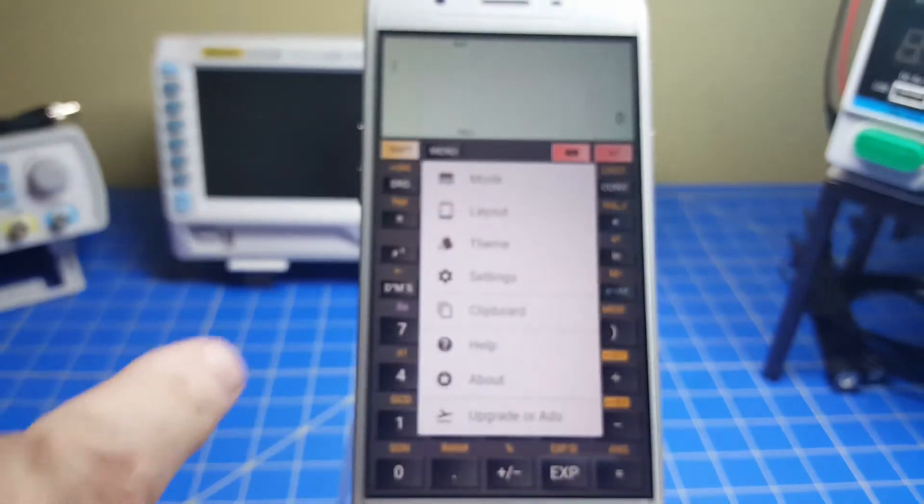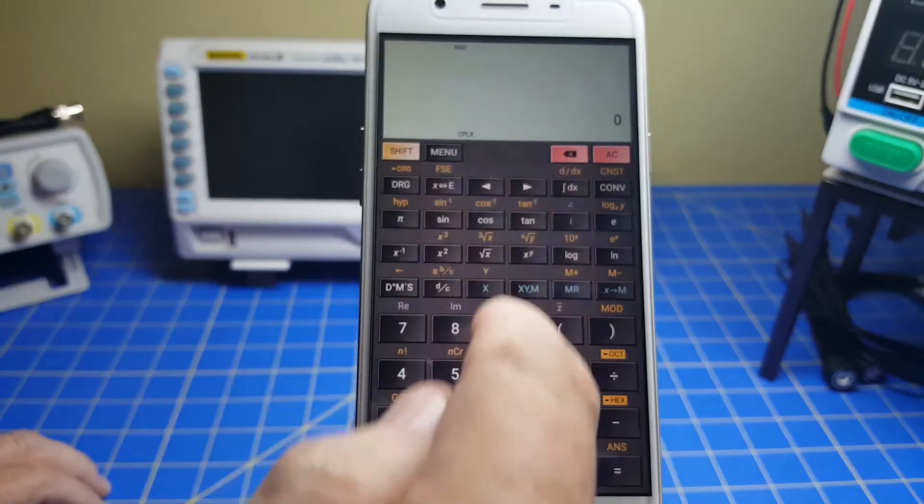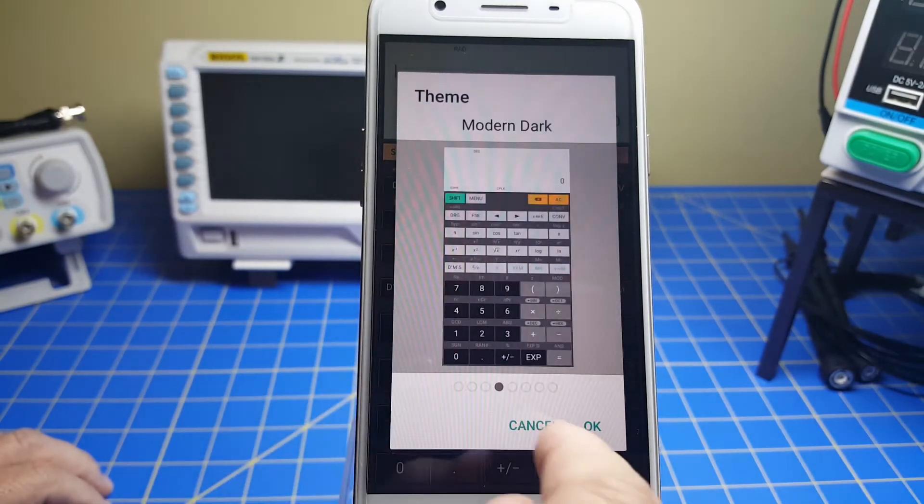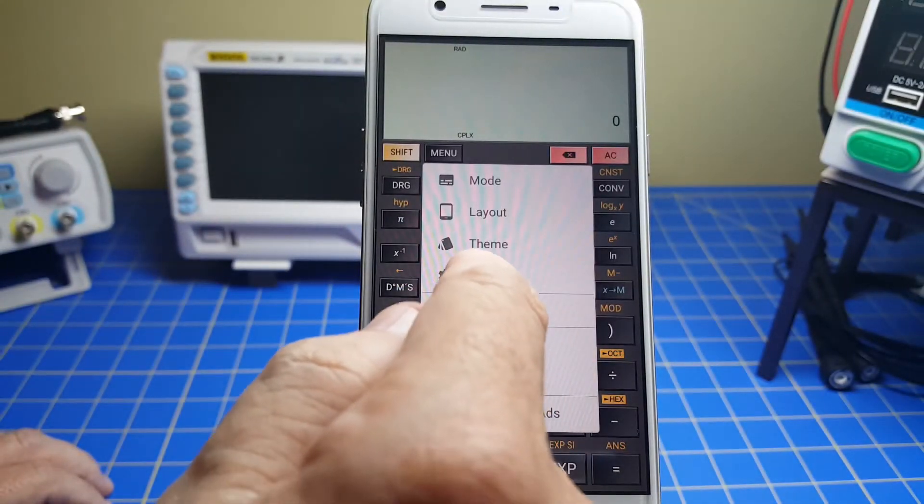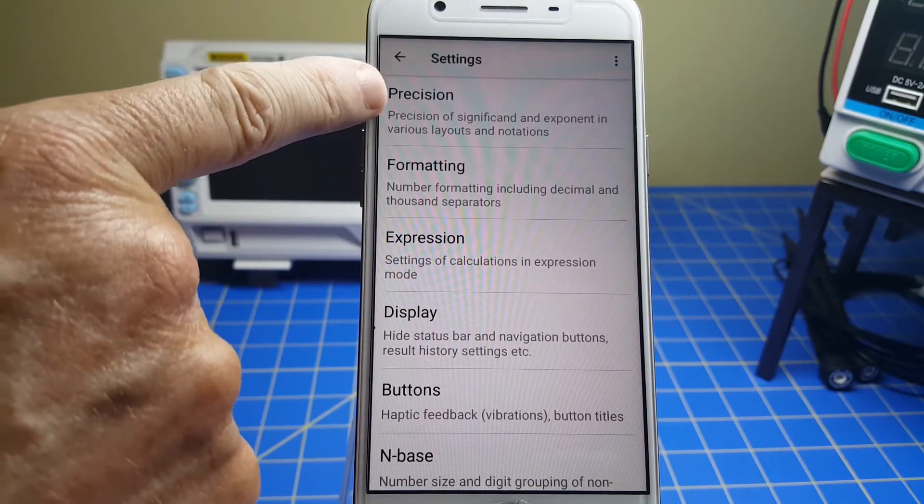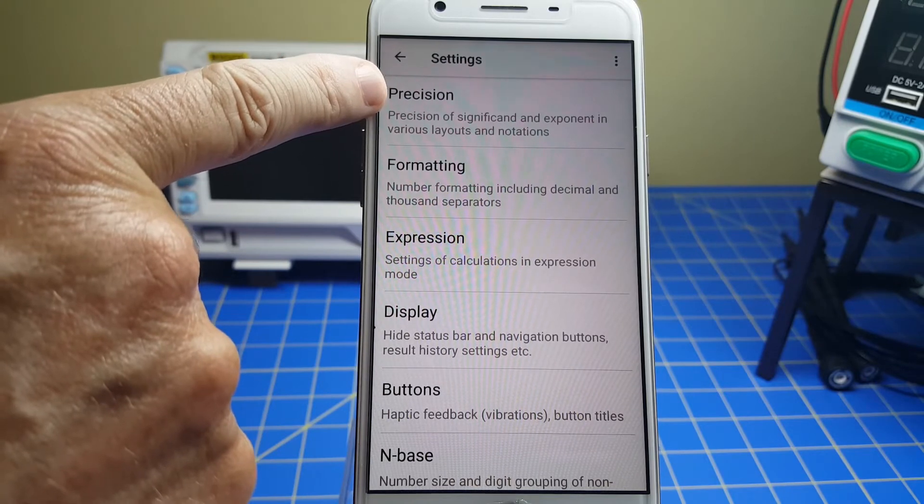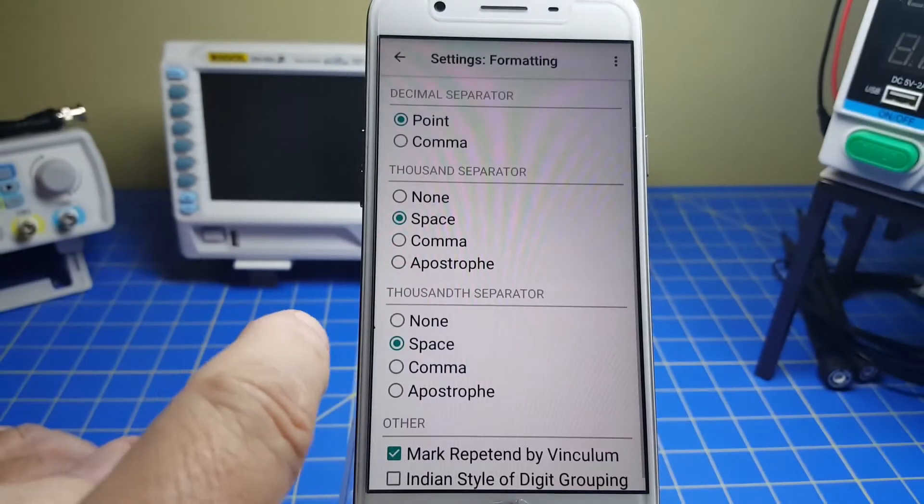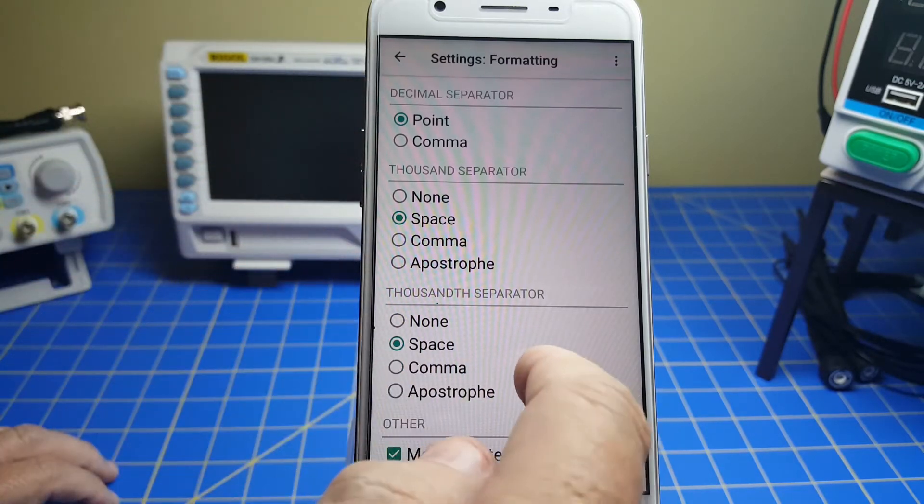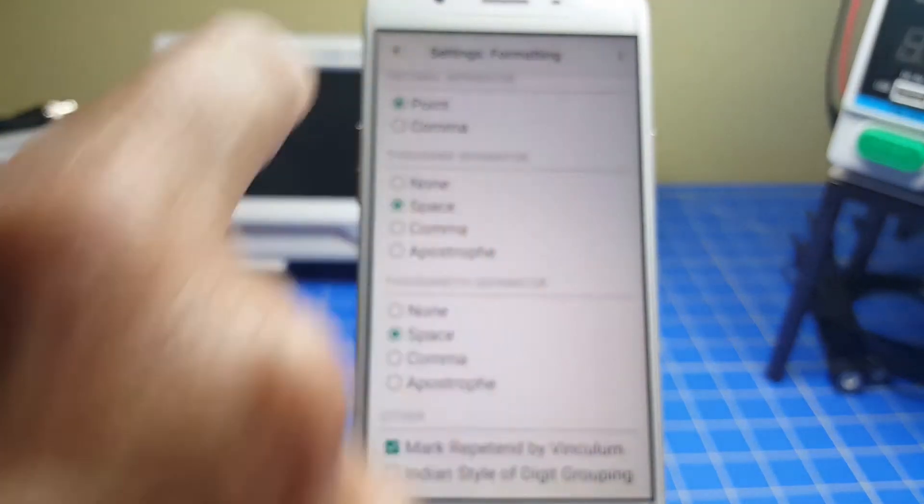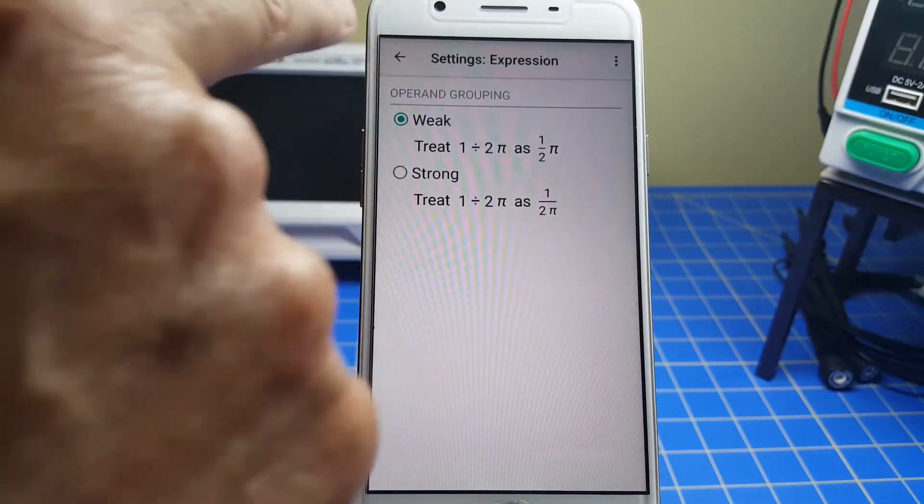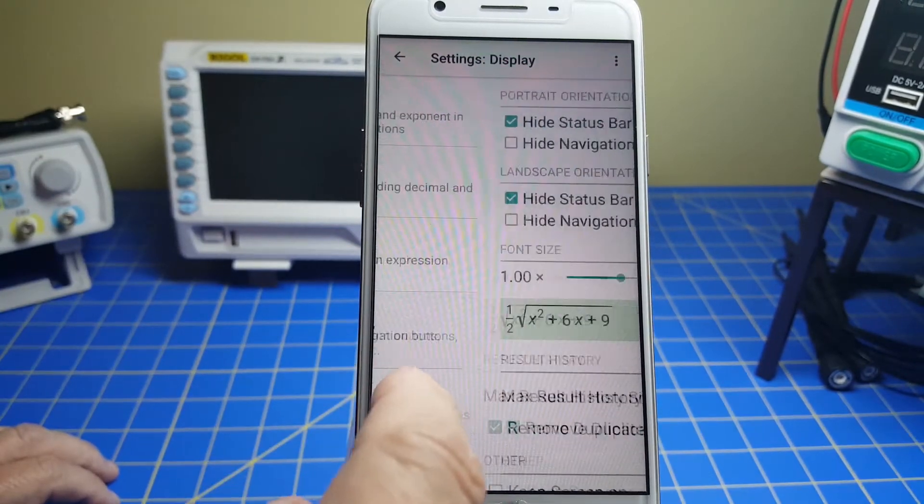Back to the menu. There's a theme. You can change the display. Here's the standard classic. You can get different colors if you care about that. And then settings. Now, settings is great because you can decide how many decimal points you want. Formatting. If you use points or commas for your decimal separators. Thousand separators. You can choose that. Expression. You can tell it how you want your expressions.